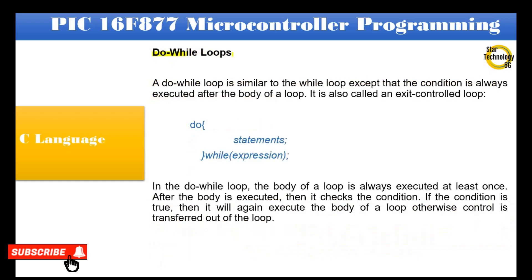A do-while loop is similar to the while loop except that the condition is always executed after the body of the loop. It is also called an exit-controlled loop. The syntax is: do { statements } while (expression). In the do-while loop, the body of the loop is always executed at least once. After the body is executed, it checks the condition. If the condition is true, it will again execute the body; otherwise, control is transferred out of the loop.